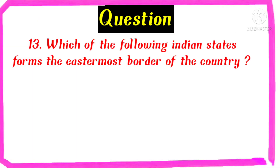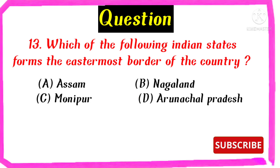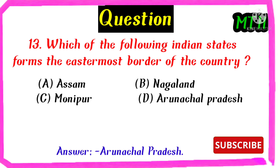Which of the following Indian states forms the easternmost border of the country? Assam, Nagaland, Manipur, Arunachal Pradesh. The right answer is Arunachal Pradesh.